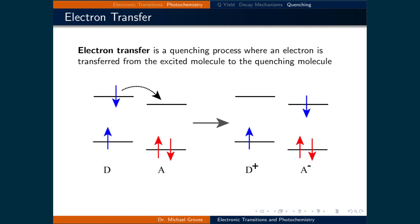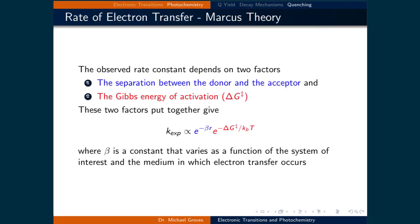The final quenching process we'll examine is electron transfer. Electron transfer is a quenching process where an electron is transferred from the excited molecule to the quenching molecule, as illustrated in the diagram. The observed rate constant of the electron transfer process, denoted as K_EXP, depends on two factors: the separation between the donor and the acceptor, and the Gibbs energy of activation. These give K_EXP proportional to e^(−β·r) · e^(−ΔG‡ / k_B·T), where β is a constant that varies as a function of the system and the medium in which electron transfer occurs.